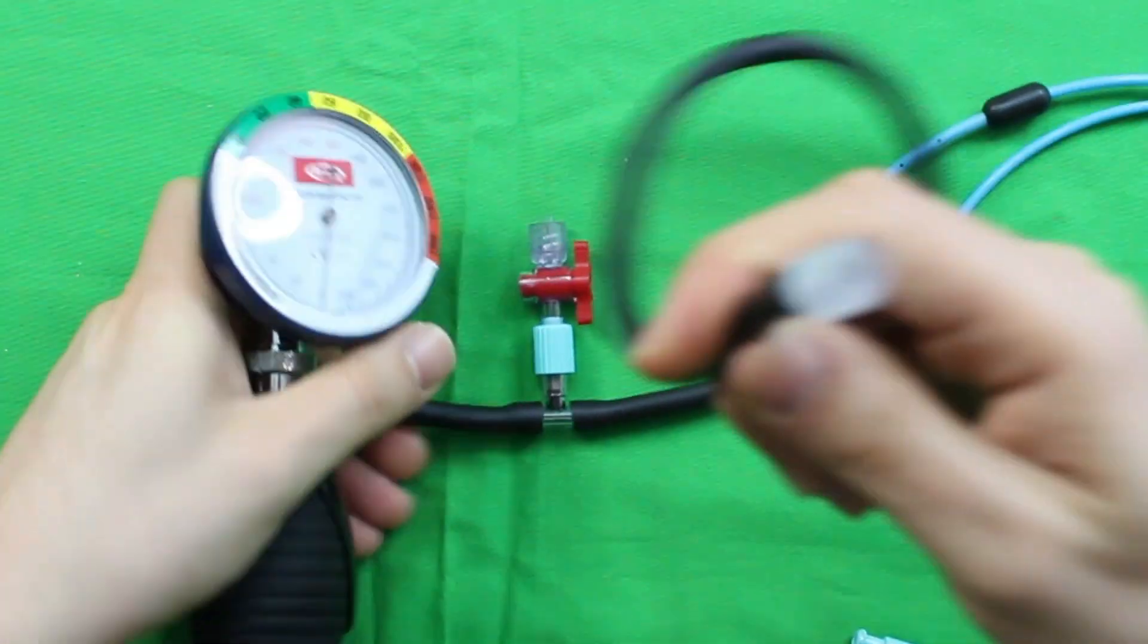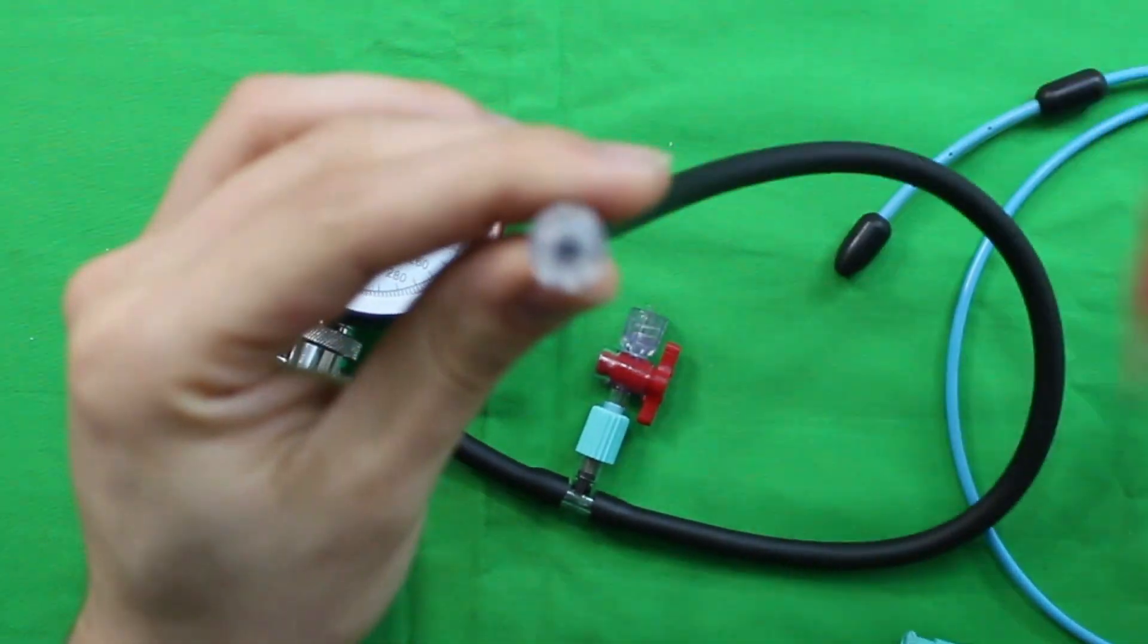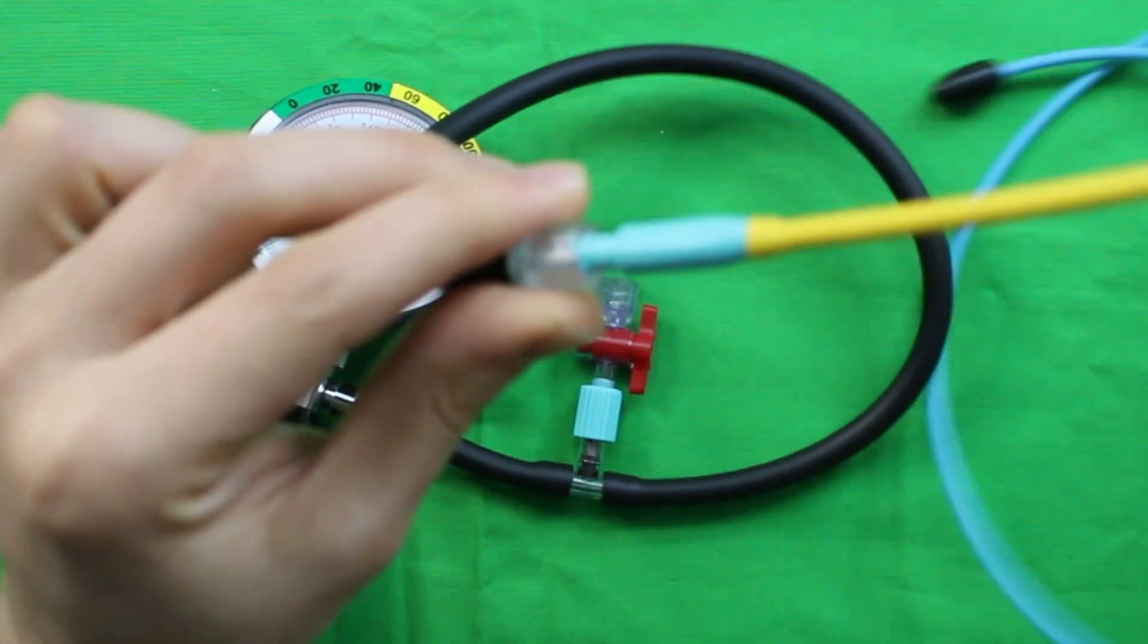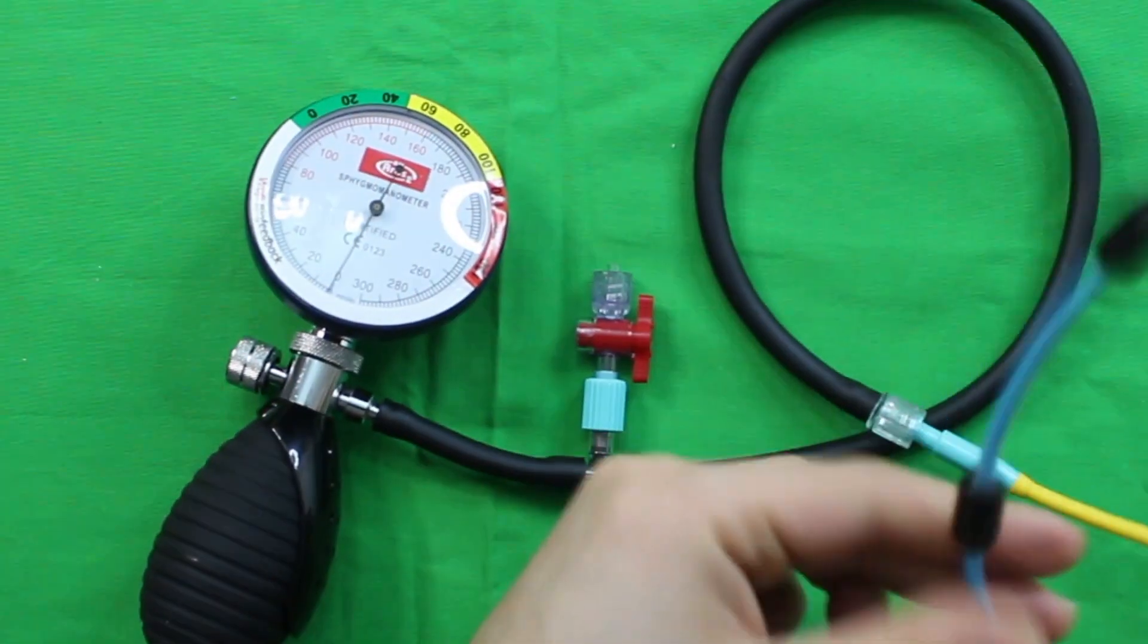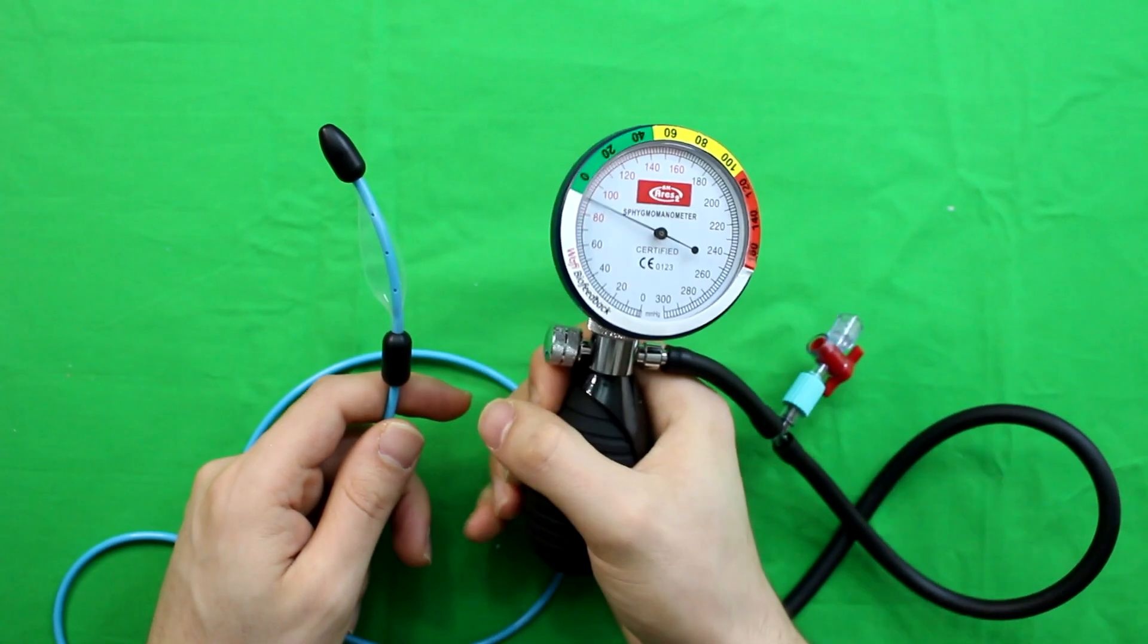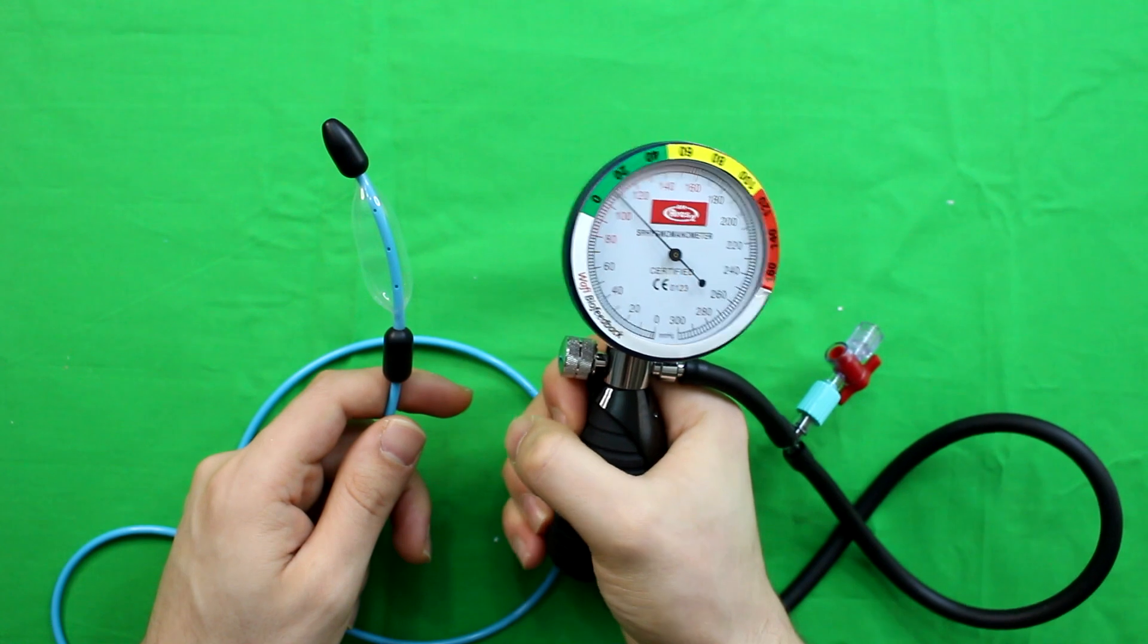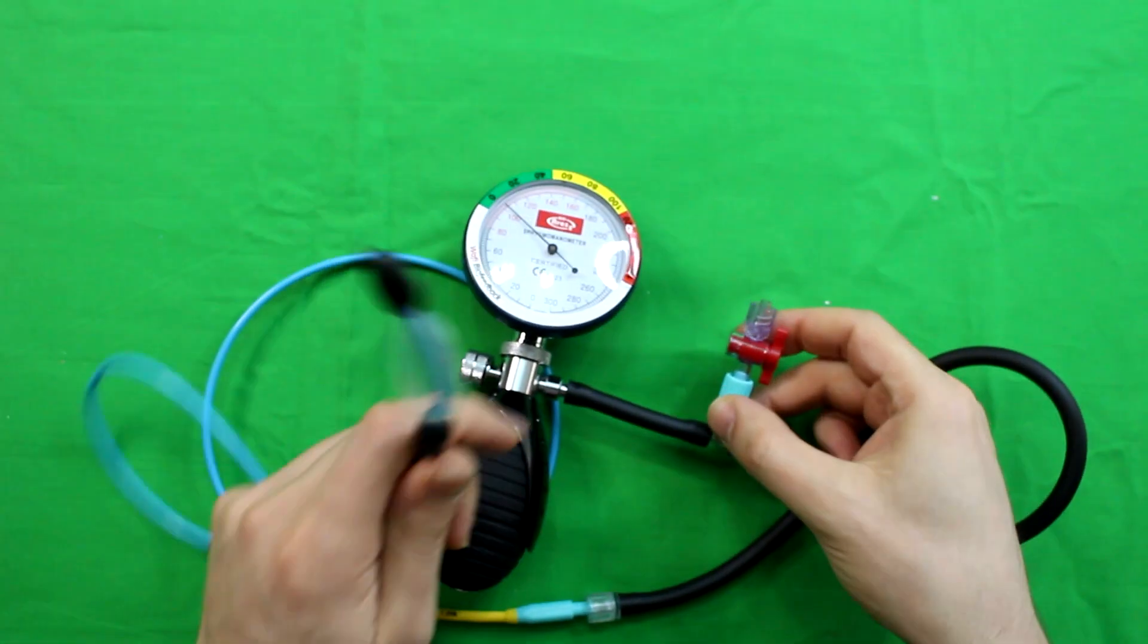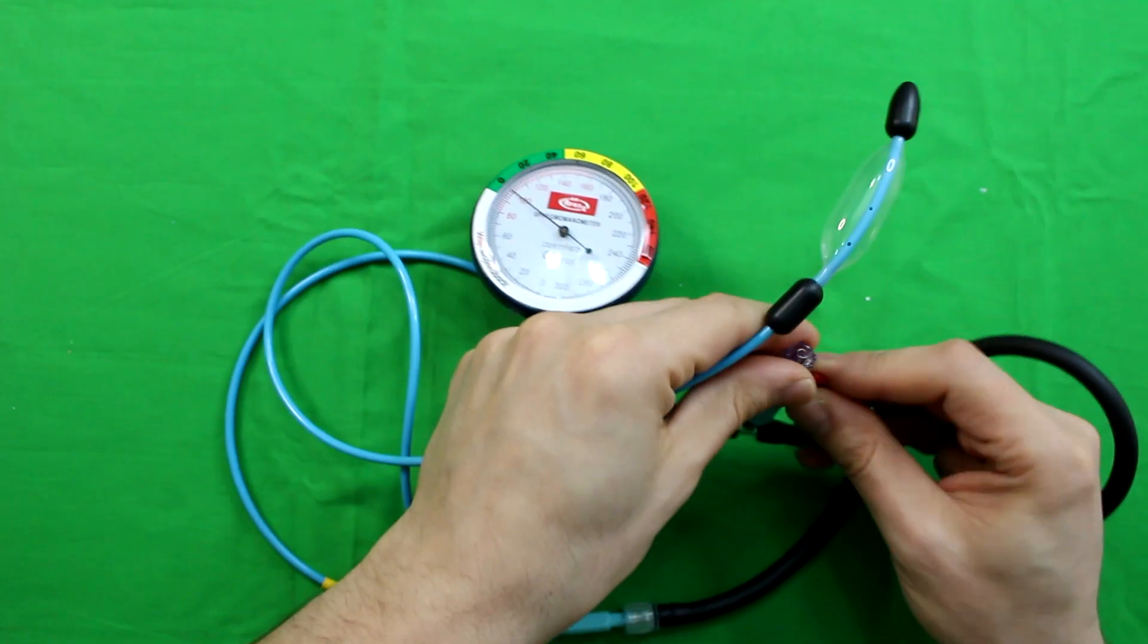Connect the catheter with the valve cable. Inflate the balloon gently while the valve is open. Close the valve after the balloon is inflated.